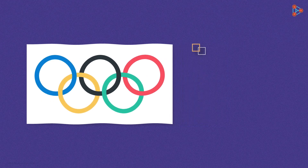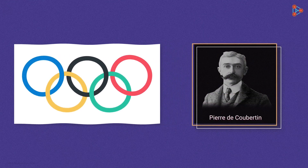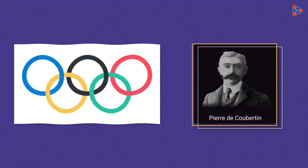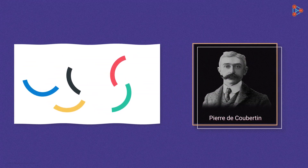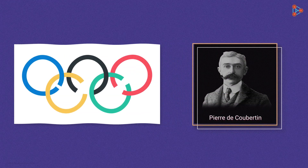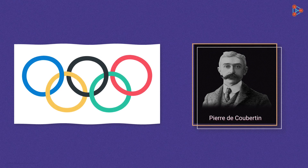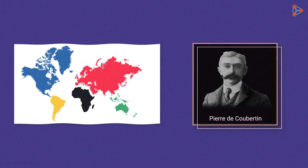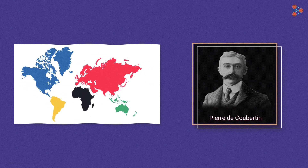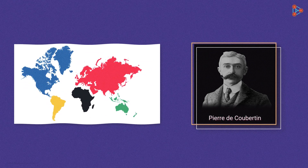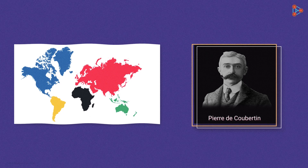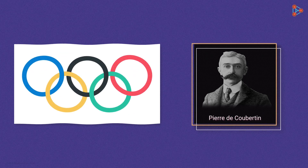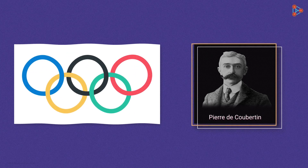Originally designed by Pierre de Coubertin, the five interlaced rings were meant to represent the number of participating continents, which were five. But each colour did not represent any particular continent.